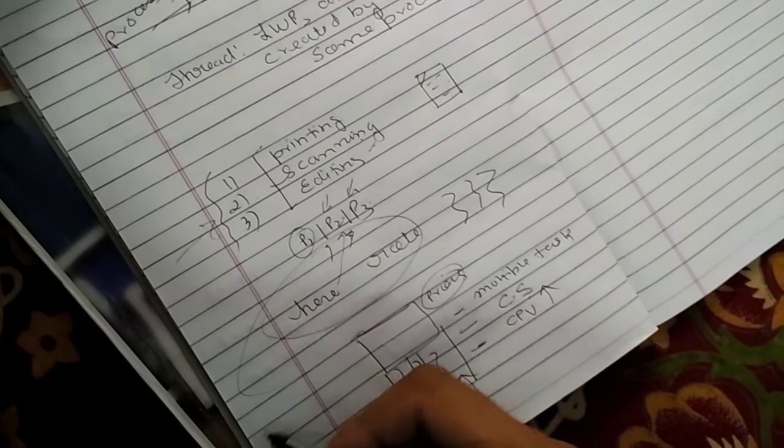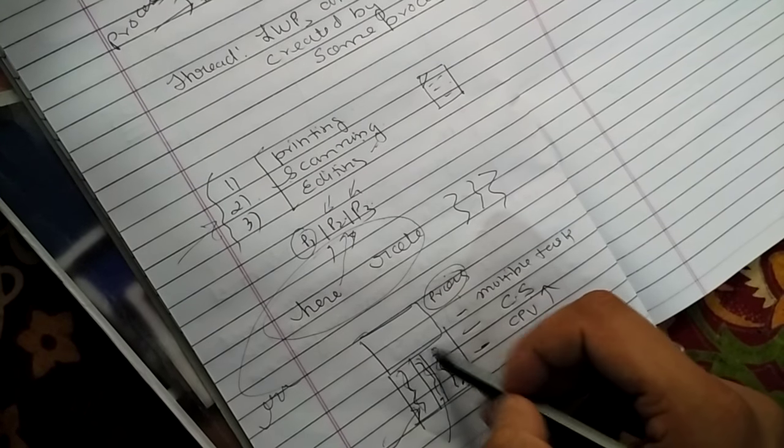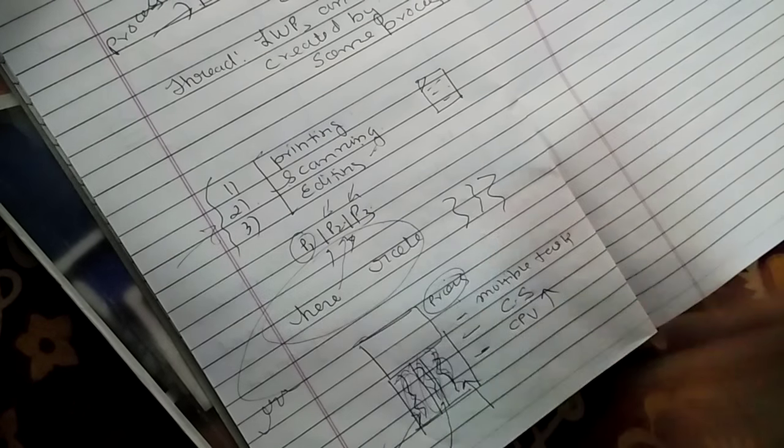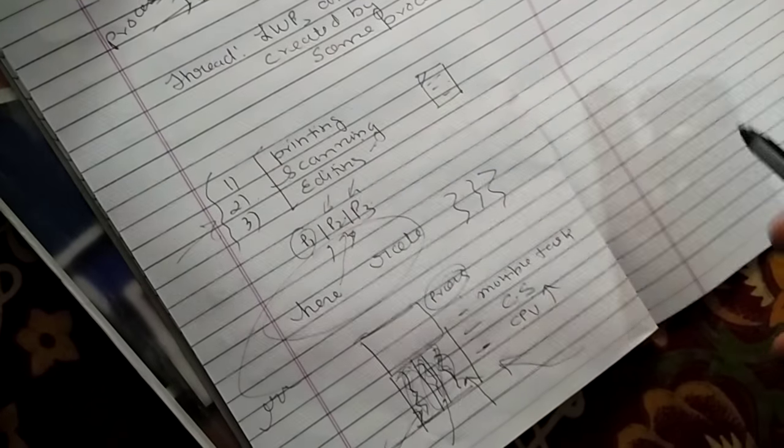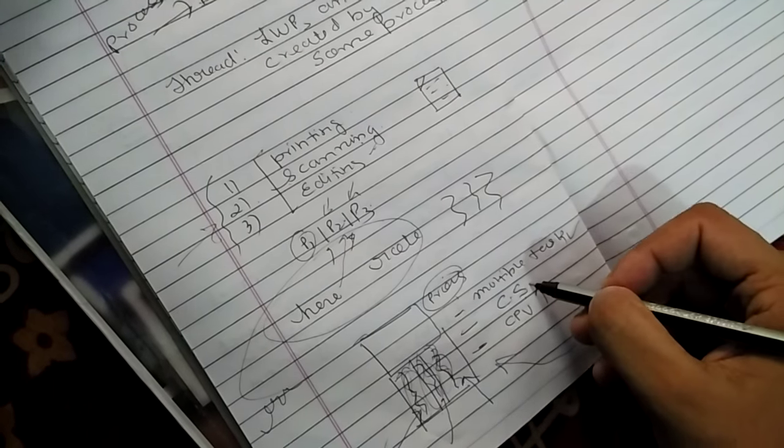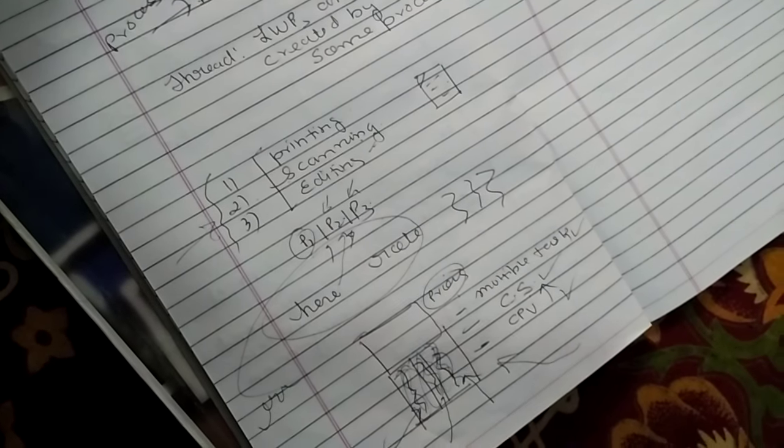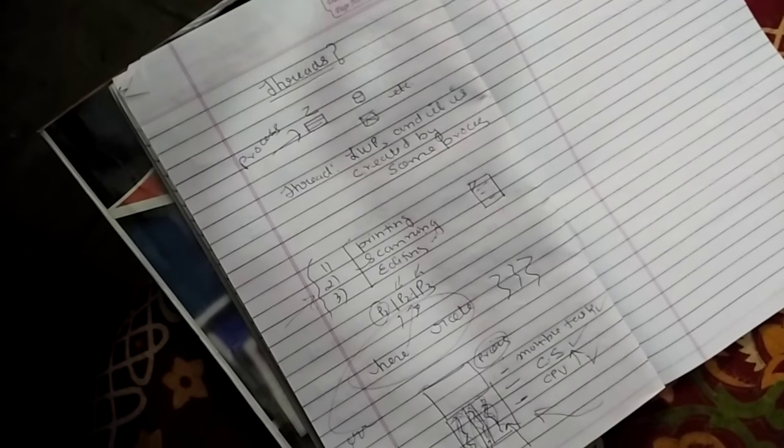So in order to use the thread, a process creates child processes. These child processes are the threads. And by the creation of such threads, we can achieve multiple tasks, we can reduce the context switches, and we can improve the CPU throughput. So these all were about the threads. Thank you for watching.